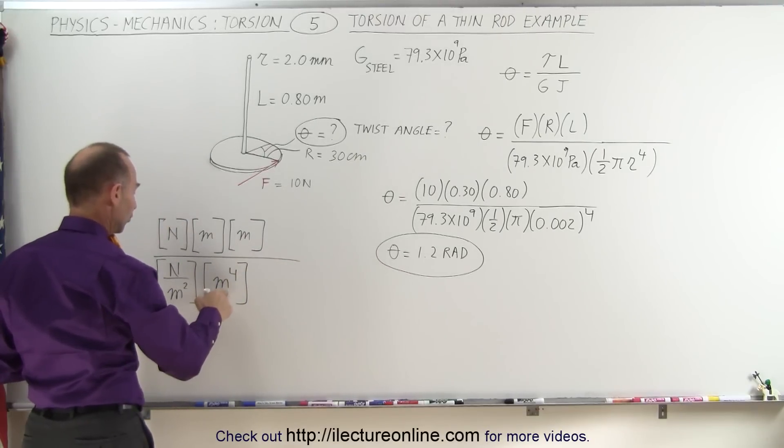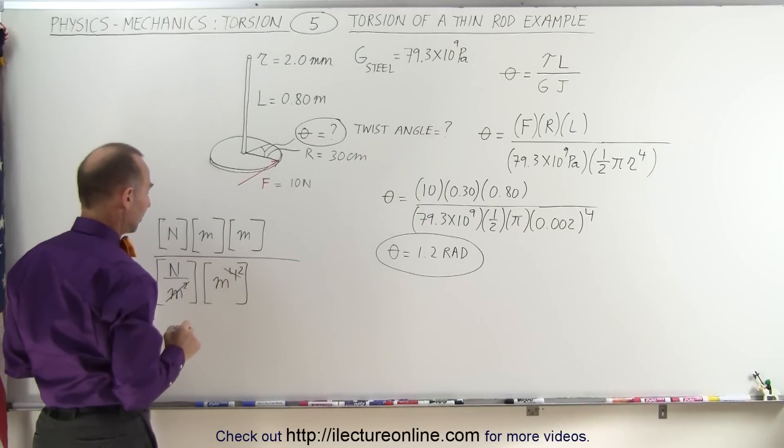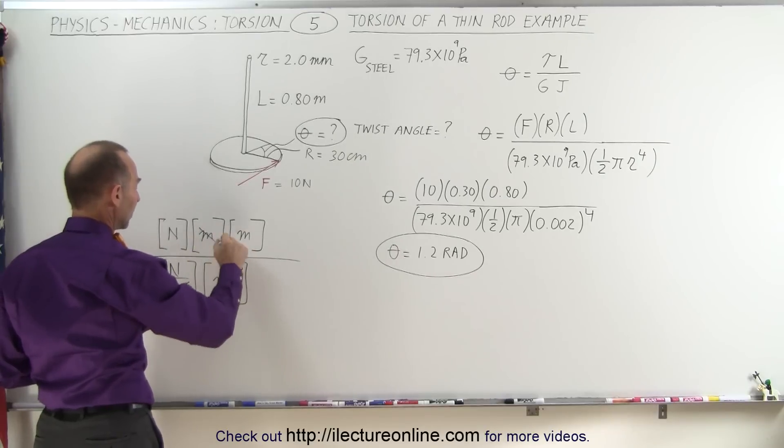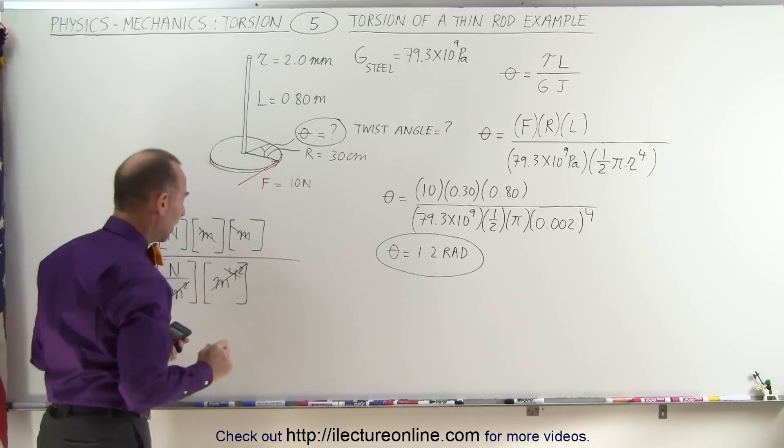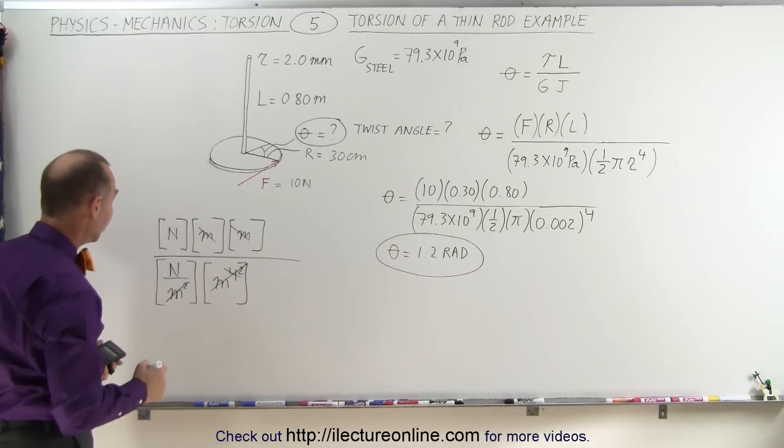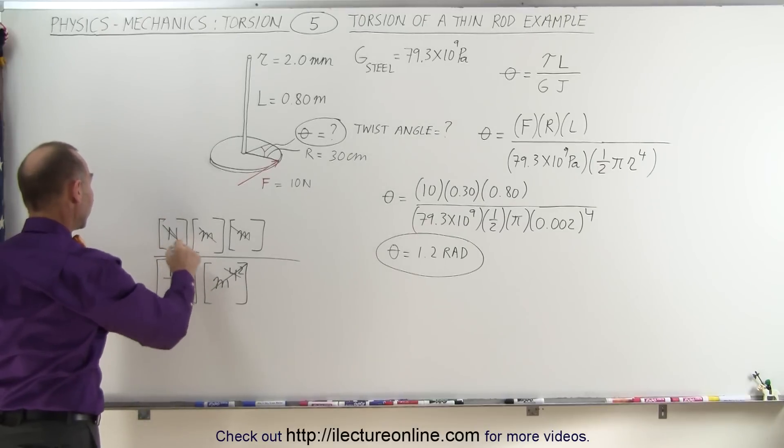All right, first of all, we have meters to the fourth, meters squared, so this cancels out this, and that becomes meters second power. Now we have meters times meters in the numerator, which cancels meters squared in the denominator. And we have newtons divided by newtons, that cancels out.